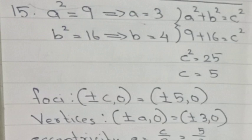Vertices: (±a, 0) = (±3, 0). Eccentricity: e = c/a = 5/3. Length of latus rectum = 2b²/a = 2 × 16/3 = 32/3.